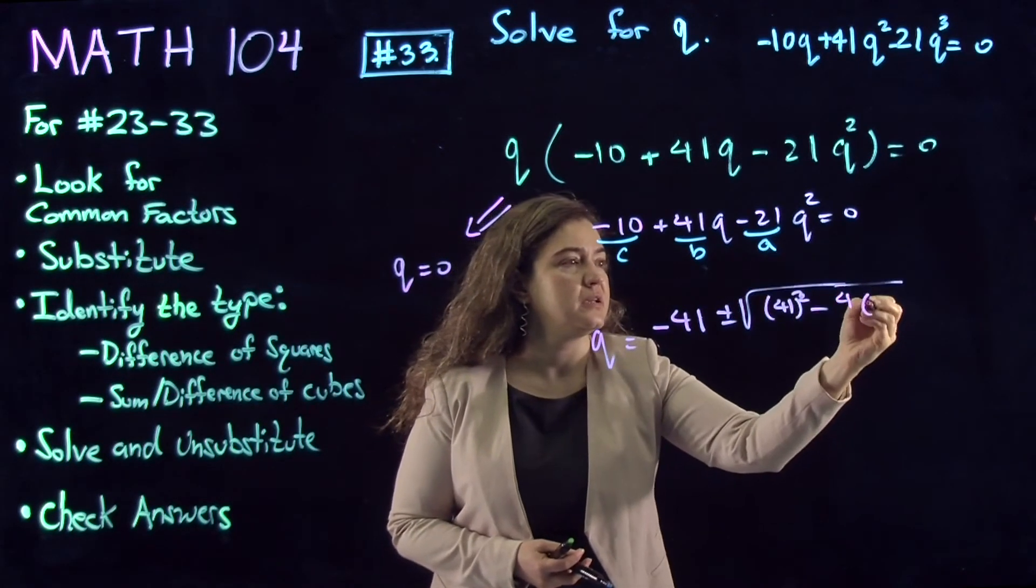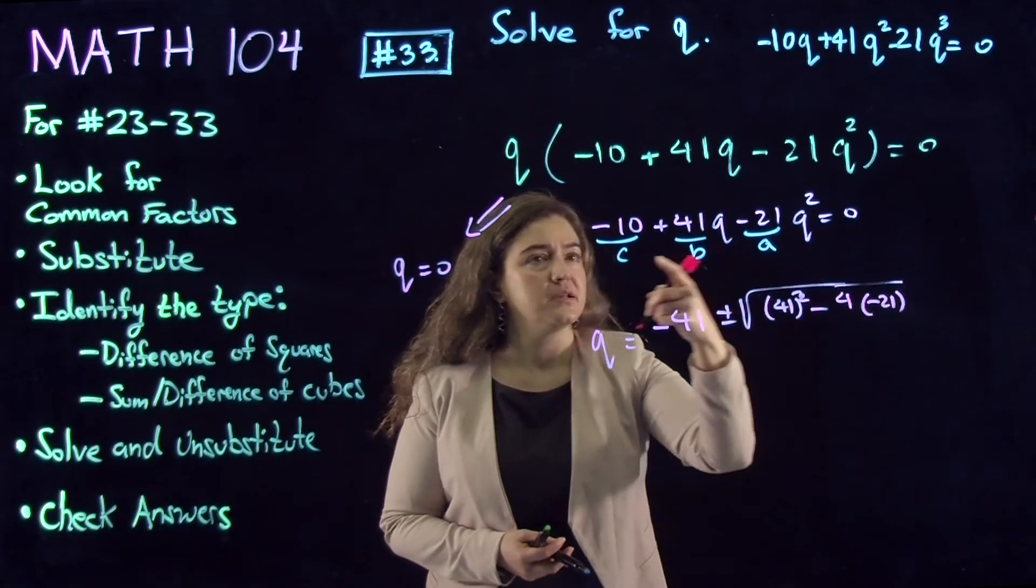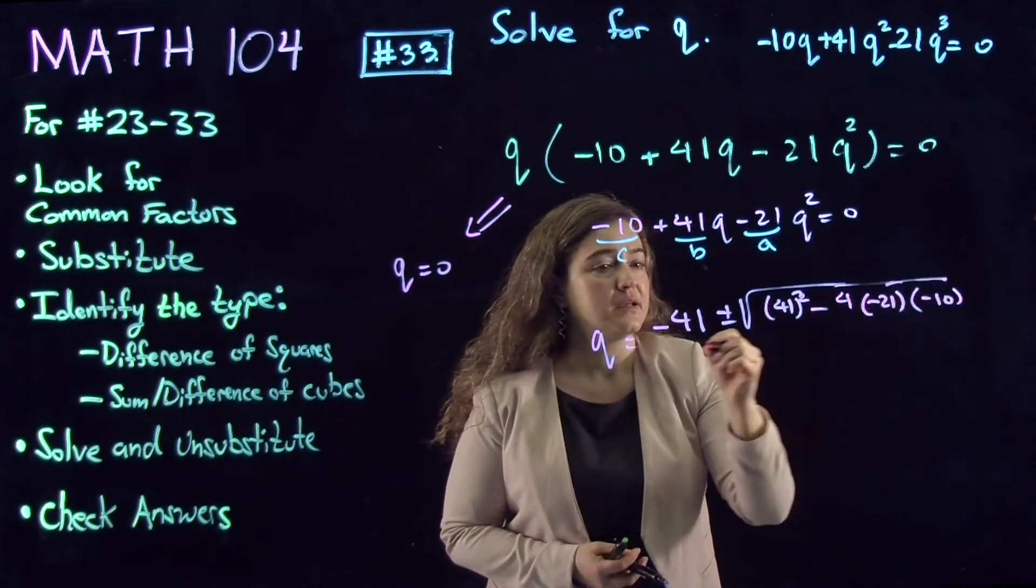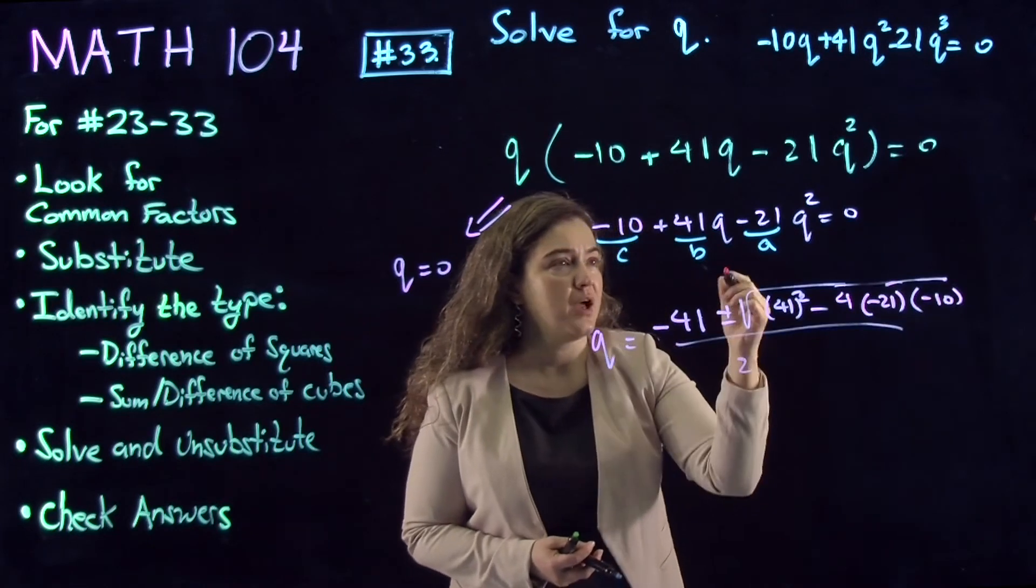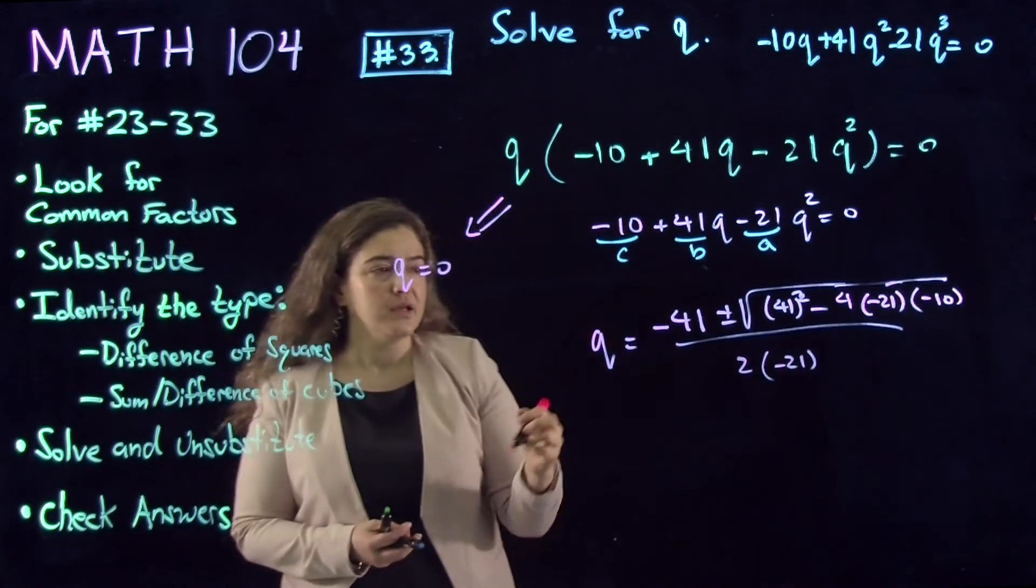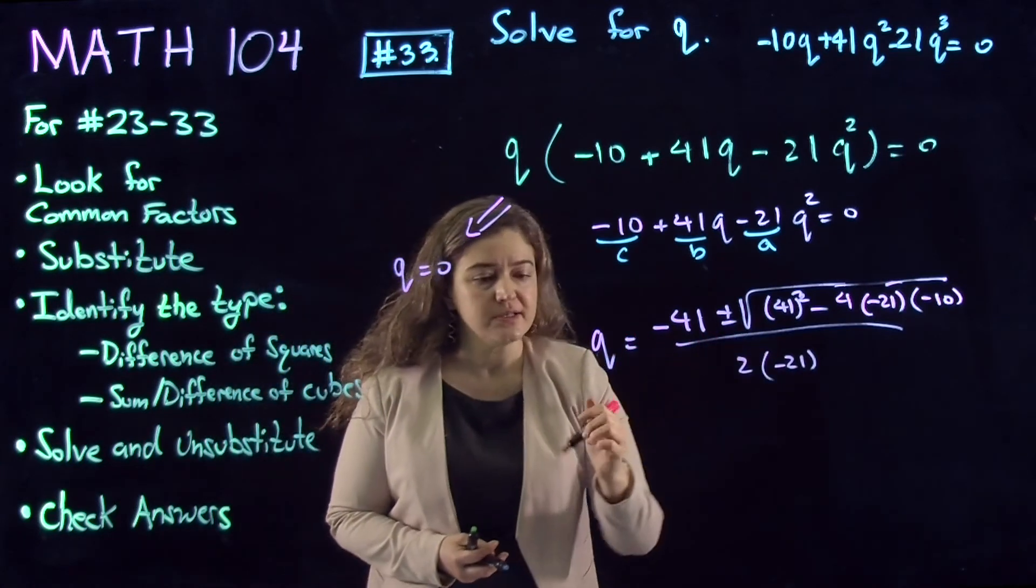That's -4 times a, which is -21, times c, which is -10, divided by 2 times a, which is -21. So there are two solutions in here from the quadratic.